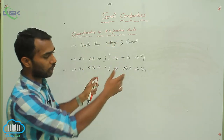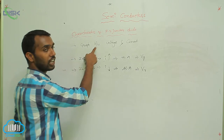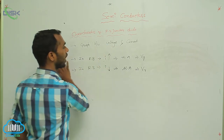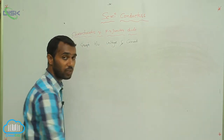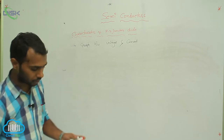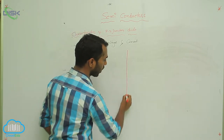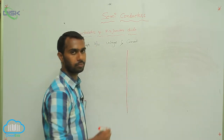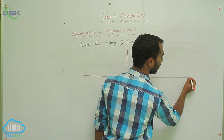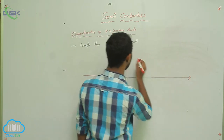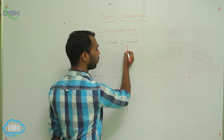Now I am going to draw a graph — voltage versus current. I am drawing a graph. This graph is very very important. Here I am taking a y-axis and an x-axis.